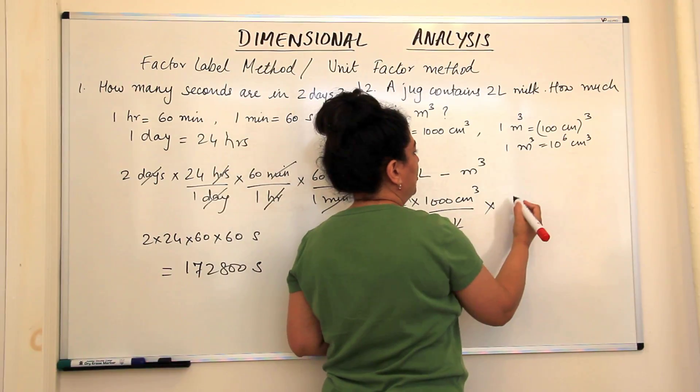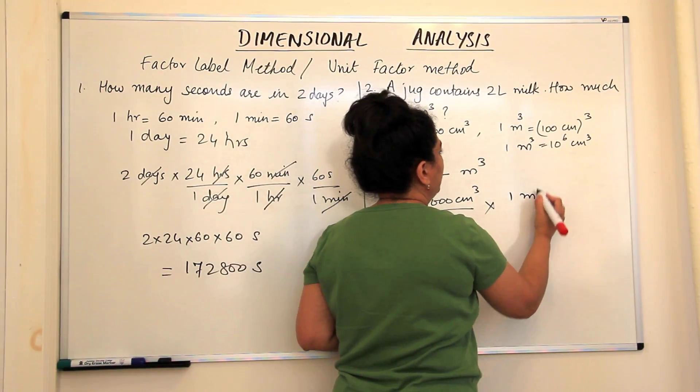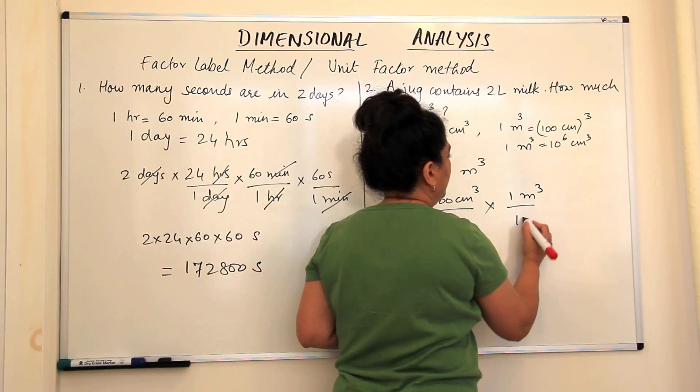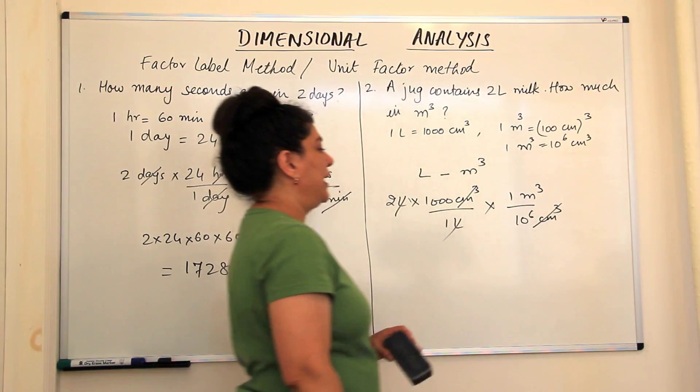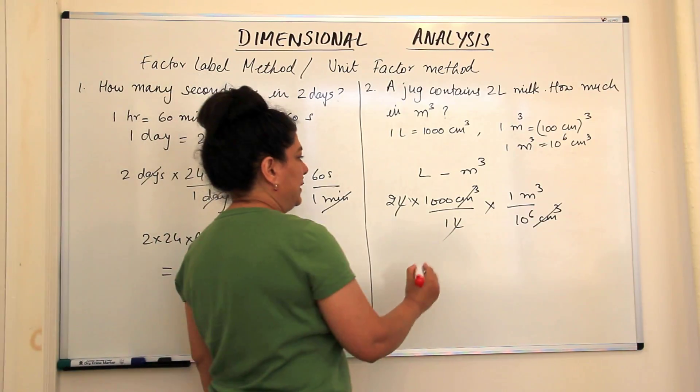We want to cancel out the centimetre cube. So we have 1 metre cube over 10 to the power 6 centimetre cube. The centimetre cube and the centimetre cube are cancelled out. So what are we left with now?